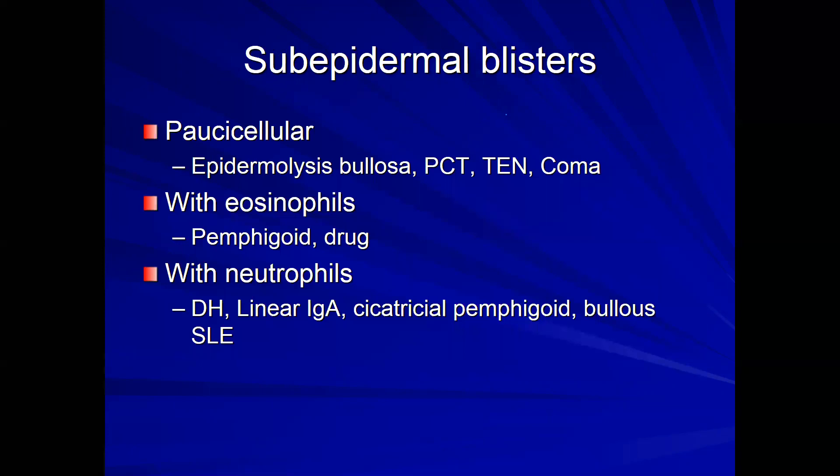Moving on to subepidermal blisters, I like to separate these by inflammatory cell type. You can have paucicellular subepidermal blisters — EBA (epidermolysis bullosa acquisita), porphyria cutanea tarda, TEN, and coma blisters. You can have a subepidermal blister with eosinophils, which tends to be pemphigoid or a drug eruption. Or you can have a subepidermal blister with neutrophils, in which case dermatitis herpetiformis, linear IgA, bullous lupus, or cicatricial pemphigoid can be on your differential.